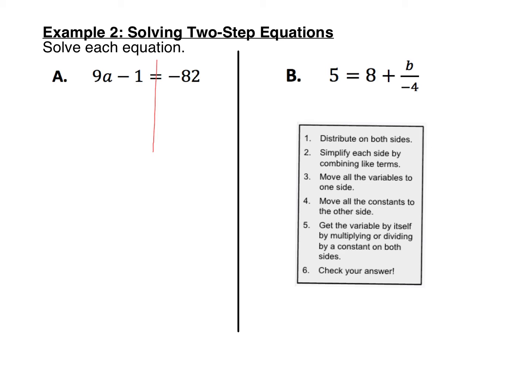Let's get rid of that minus one by adding one on each side. Once you do that, negative one and positive one cancel out and you're left with 9a equal negative 81.